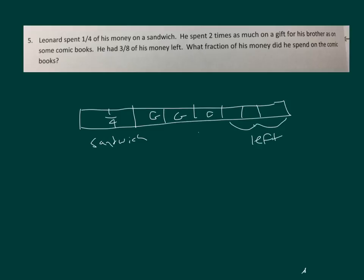Let's see if this works out: two-eighths, three-eighths, four-eighths, five-eighths, six-eighths, seven-eighths, eight-eighths. On the gift he spent two-eighths, so he spent a quarter on the gift. And on the comic books, he only spent one-eighth.